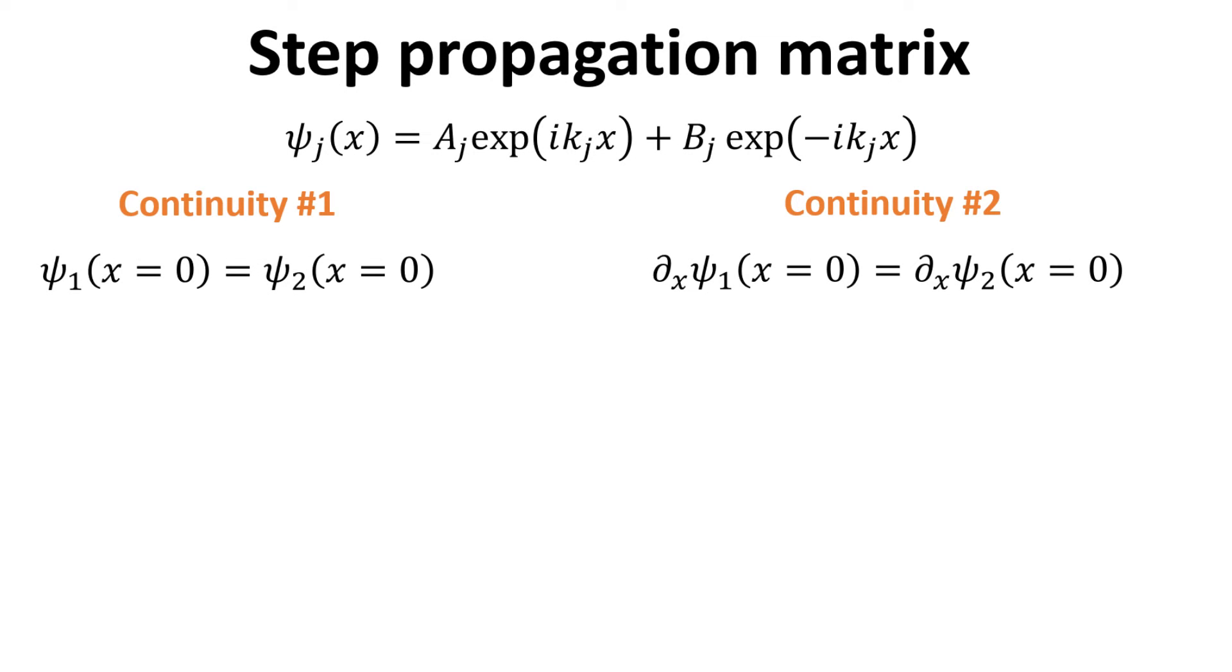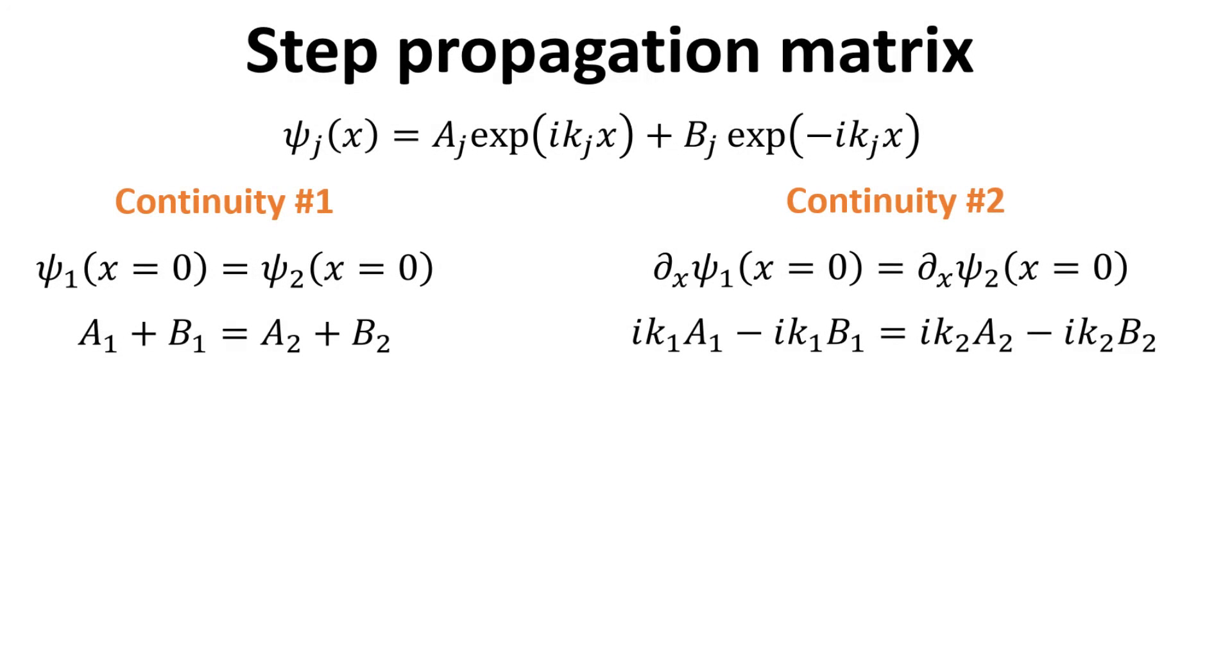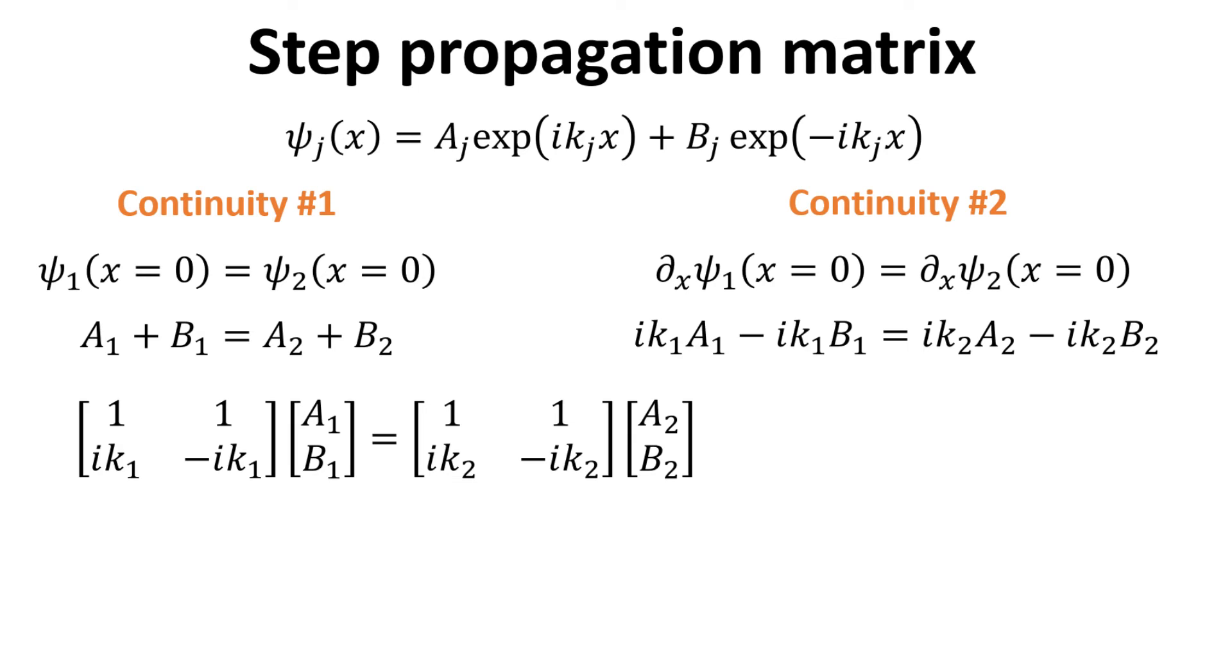We have learned that these a and b amplitudes are related via the continuity of the wave functions and its derivative at the step. Imposing these continuity requirements of the wave functions and letting x equals 0 then allows us to arrive at the following equations relating a1, b1, a2 and b2. These two equations can be written in matrix form as shown, which relates the scattering amplitudes of region 1 to that of region 2.